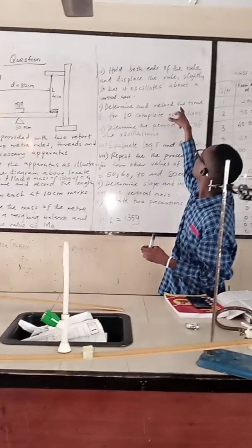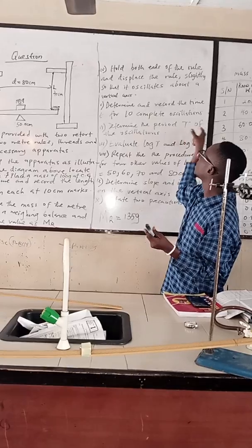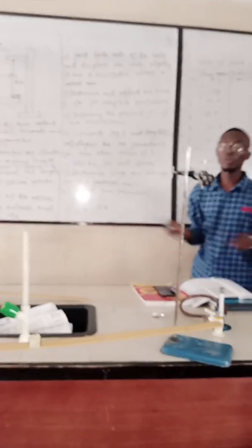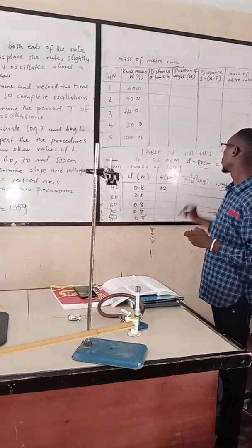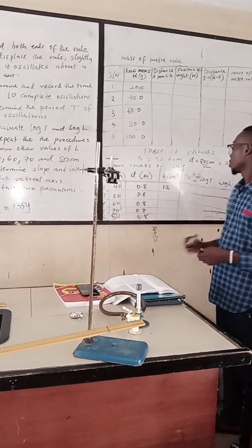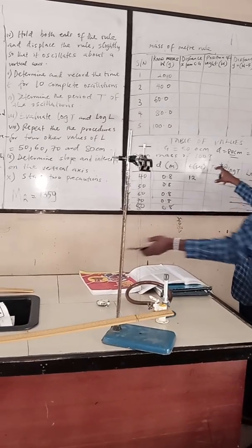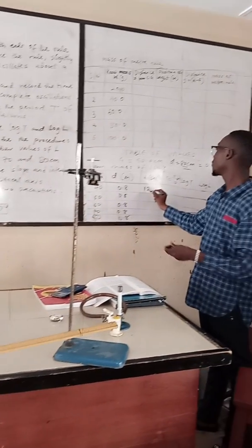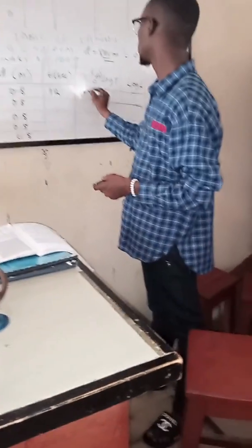They say determine and record the time for 10 complete oscillations. We have done that. Determine the period T of the oscillation. Of course you know that big T is equal to small t over 10. We have to get our big T. This will now be 12 over 10, we will have here to be 1.2.